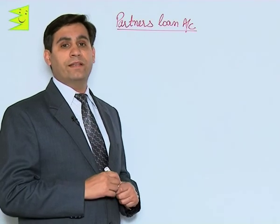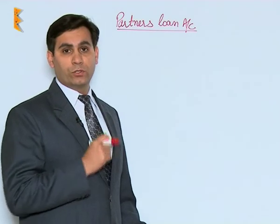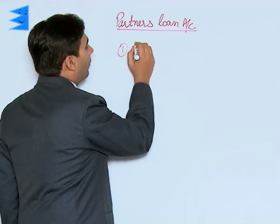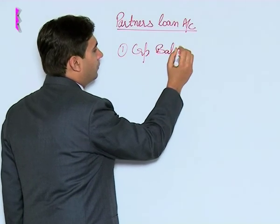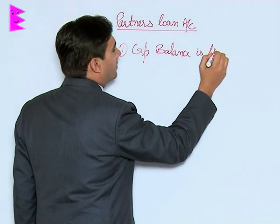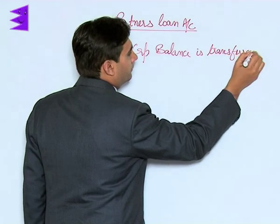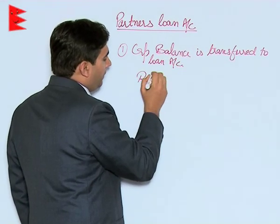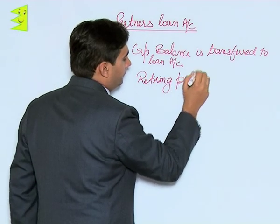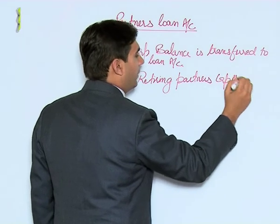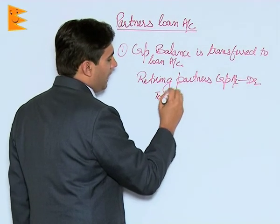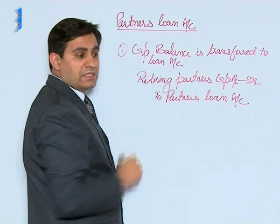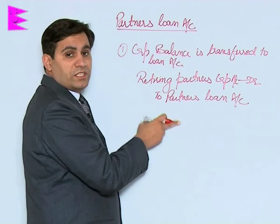Let us see what these journal entries would look like when the capital account is transferred to the loan account and when the interest is due or when installments are paid. In the first case, when the capital balance is transferred to the loan account, the entry would be: retiring partner's capital account debited to retiring partner's loan account. That is, whatever his capital balance after adjustment would now be transferred to his loan account.